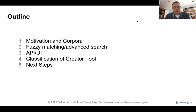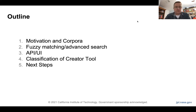I'll start out with a motivation for why we want to gather corpora and make them searchable. I'll talk a little bit about fuzzy matching and some of the advanced search things we've recently added, and then pass it over to Ryan for the API and UI, Anastasia for the classification of creator tool, and then I'll talk about next steps.